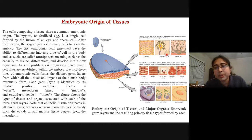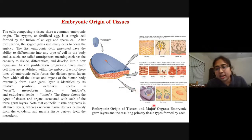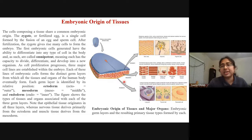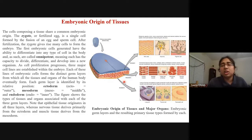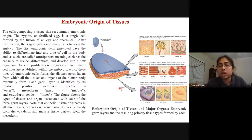From the ectoderm we get skin cells, neurons, and pigment cells. From the mesoderm we get cardiac muscle, skeletal muscle, tubule cells of the kidney, red blood cells, and smooth muscles. From the endoderm we get lung cells, thyroid cells, and pancreatic cells. These three basic layers generate all different tissue cells, tissues, and ultimately organs. As we get older, these cells become depleted, making it harder to recover from tissue damage.